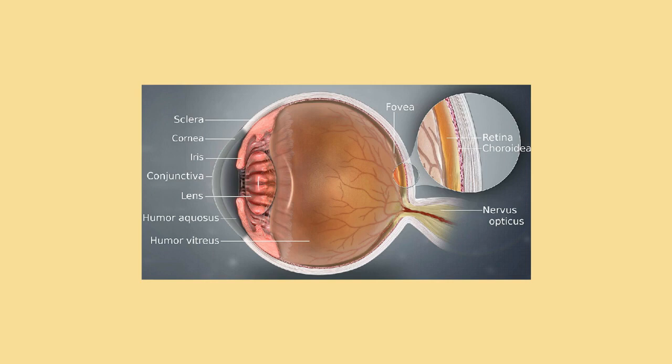The human eye can detect a luminance from 10⁻⁶ cd/m² (1 millionth, or 0.000001 candela per square meter) to 10⁸ cd/m² (100 million candelas per square meter). That is, it has a range of 10¹⁴ cd/m², or 100 trillion — about 46.5 f-stops.